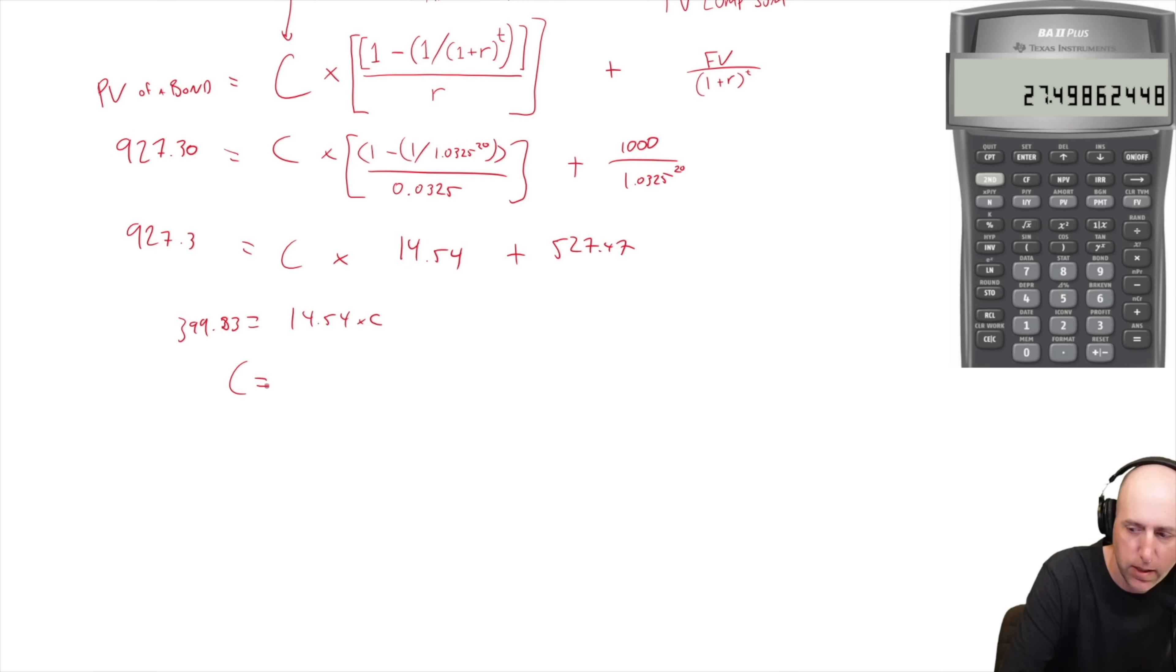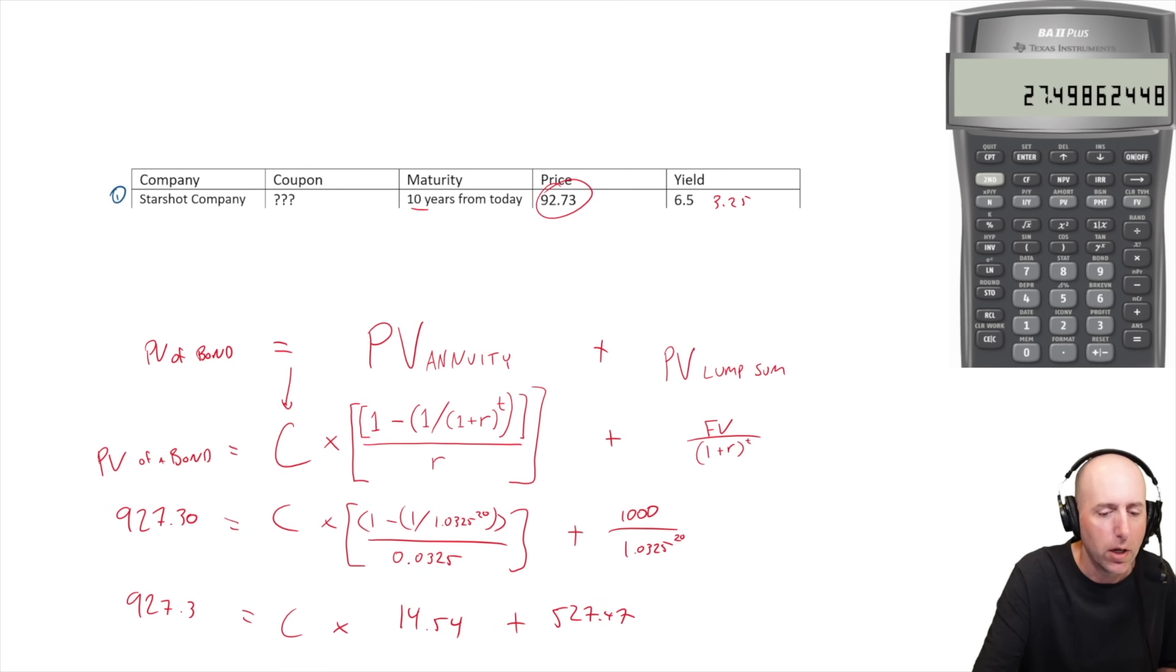$399.83 equals 14.54 times C. Divide both sides by 14.54, so this number divided by 14.54 equals our payment. C equals 27.4986, we're gonna call this $27.50. And remember that's every six months, so double it to get annualized and we end up with a payment of $55. This number is looking very familiar. $55 divided by $1000 gives us a coupon rate of 5.5%. So that's the number that would go in our table, and that is the number we got earlier in the question.